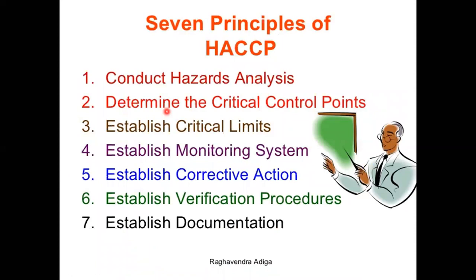Now we will see the different principles of HACCP. First, conduct hazard analysis. Second, determine critical control point. Third, establish critical limits. Fourth, establish monitoring system. Fifth, establish corrective action. Sixth, establish verification process procedure. And seventh, establish documentation. We will now see each individual principle of HACCP one by one.